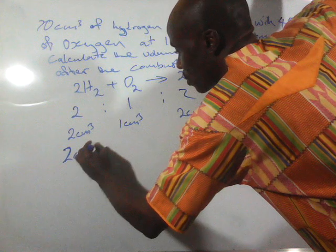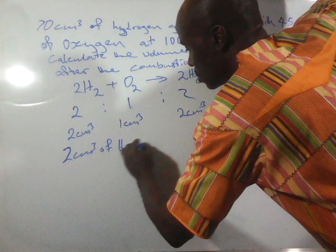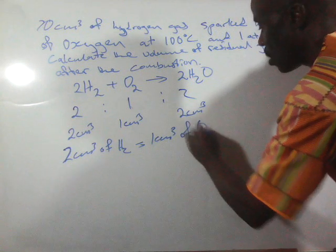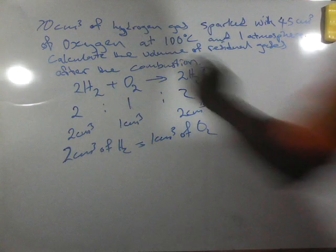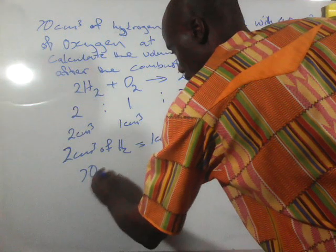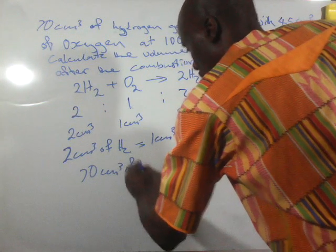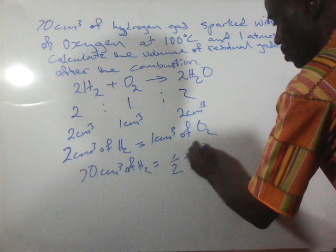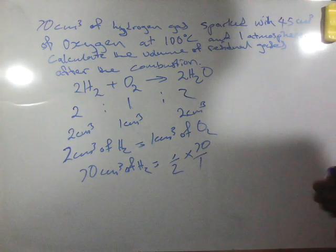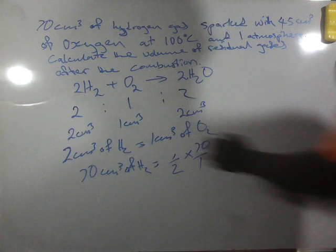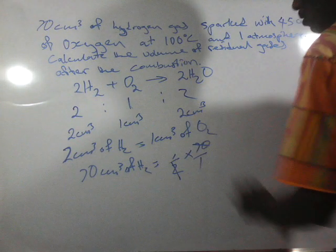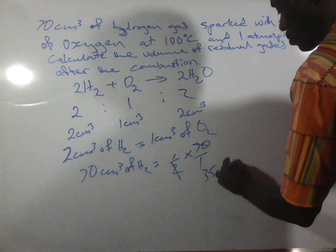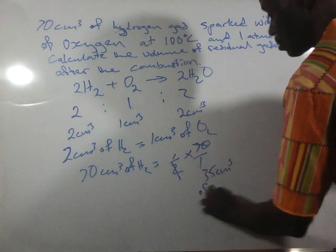So 70 cm³ of hydrogen will react with 1/2 times 70. We cancel out to get 35 cm³ of oxygen.